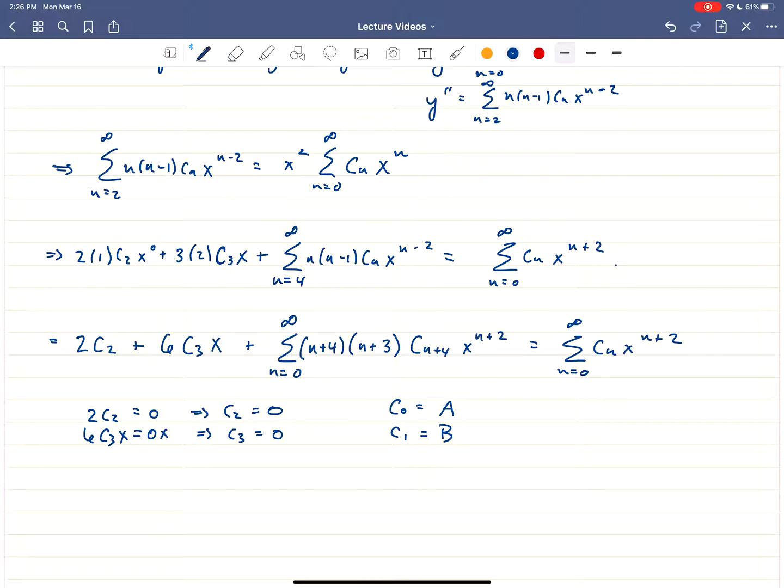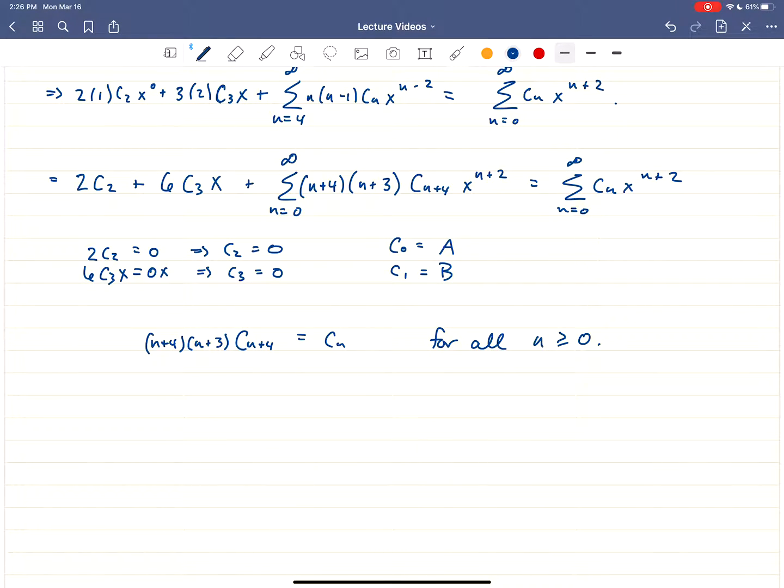And then let's look at our recurrence that we're going to have. So I'm just going to look at the terms that I'm putting under braces here. So c sub n is going to be equal to this left side. And so we're going to have n plus 4 times n plus 3 times c sub n plus 4 is equal to c sub n. And this is going to hold for all n greater than or equal to 0. So we're going to solve this recurrence. We're going to get c sub n plus 4 is equal to c sub n over n plus 4 times n plus 3. This is going to hold again for all n greater than or equal to 0.